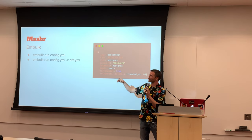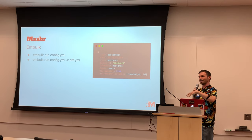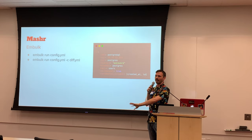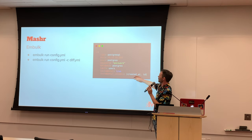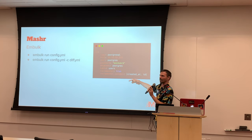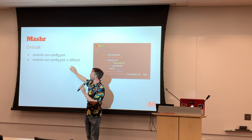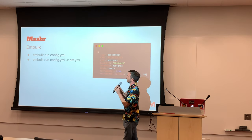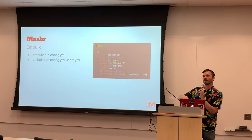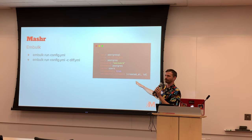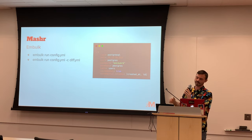In Embulk's YAML file you specify an input type and output type. For example: input type is HTTP with a URL and GET method, and the output is GCS with a bucket name. To pull data from a URL and send it to GCS once, you'd run 'embulk run' followed by the YAML filename. For incremental loading — such as pulling from a PostgreSQL database — you only want to load data you didn't load last time. In the YAML file you set incremental to true, specify columns like 'created_at', and Embulk writes a state file tracking the last value pulled, so it always knows where to resume.